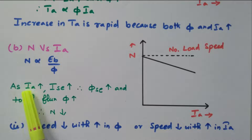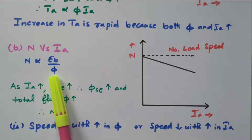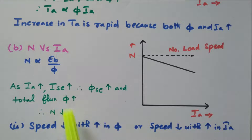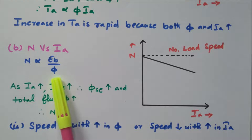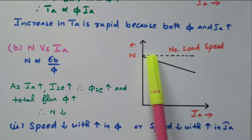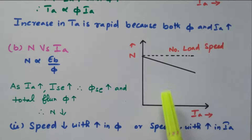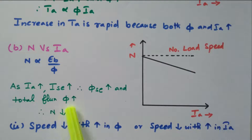When the load increases, armature current increases, series field current increases, series field flux increases, and the total flux will increase. Since flux is in the denominator and inversely proportional, if the flux increases, speed will decrease. The dotted line refers to the no-load speed. When the load increases, the speed gradually decreases due to the increase in flux.